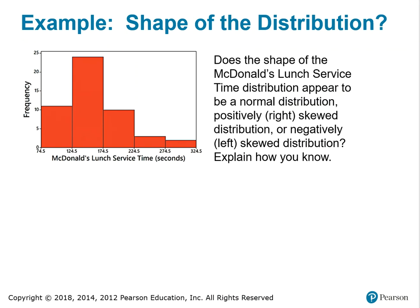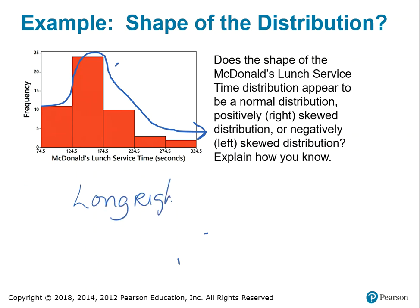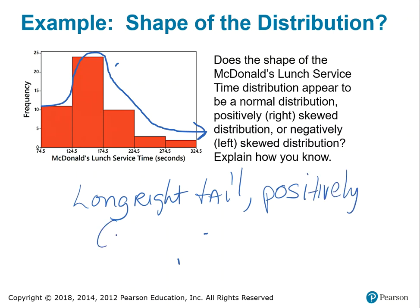So here's an example. Does the shape of the McDonald's lunch service time distribution appear to be a normal, positively right skewed, or negatively left skewed distribution? Explain how you know. Well, if we think about what we're looking for — a normal distribution is going to be bell-shaped. This actually appears to have a long right tail, so therefore this is going to be positively or right skewed.